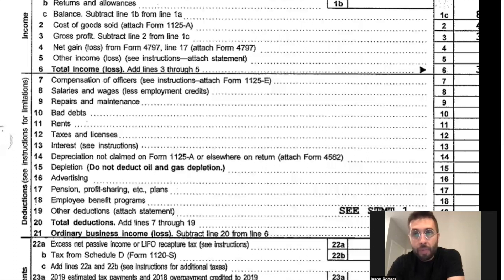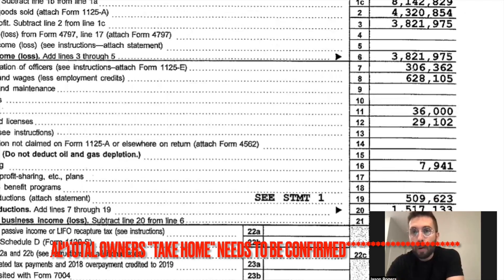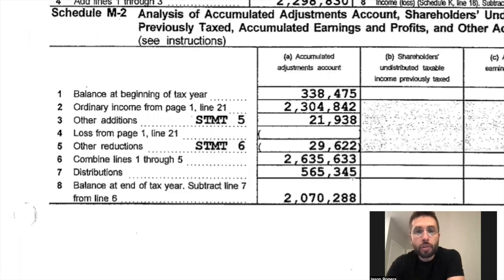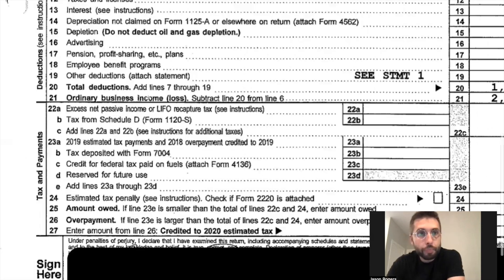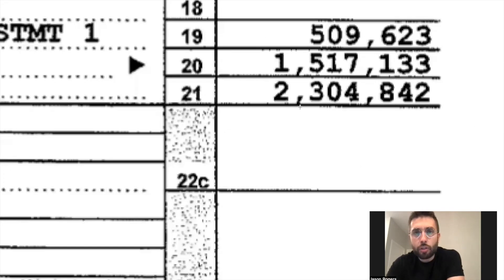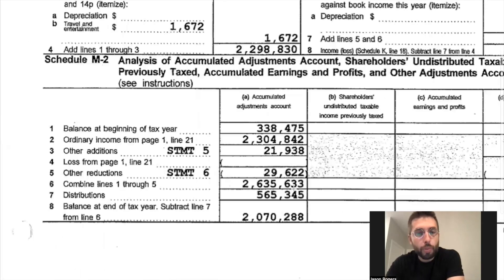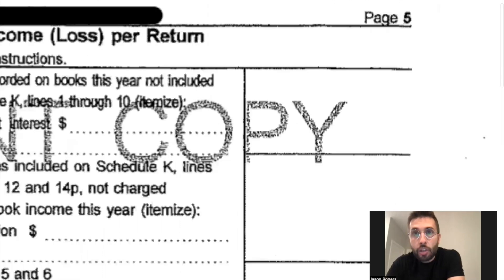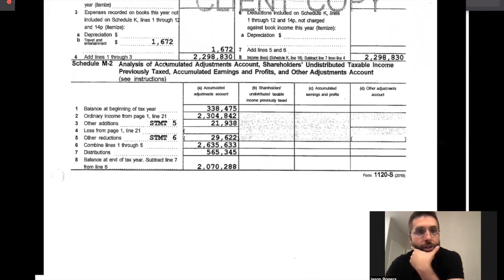Combined between the $565,000 in distributions and the $306,000 W2, the owner paid themselves over $800,000 — almost $900,000 in total payout that year. The business earned about 2.3 million in net income. This is important: when you look at the first page's compensation of officers combined with this fifth page's distribution section, you're trying to get a true sense of how much the owner is paying him or herself in this business.